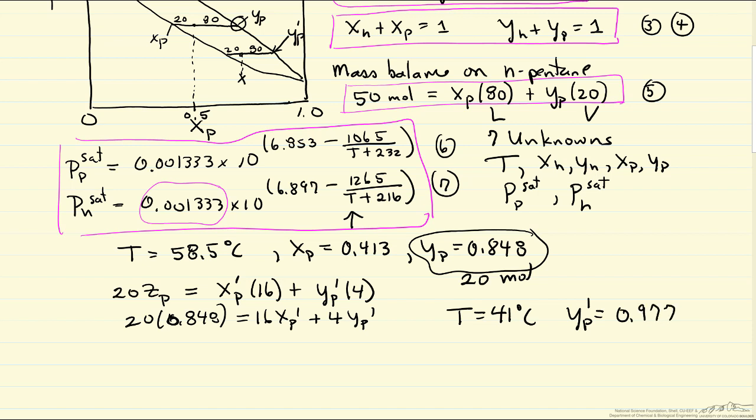So we've significantly enriched our second condensate in pentane. We've gone from 0.5 mole fraction to 0.977. And the trade-off, of course, is we only have four moles with this mole fraction, and we started out with 100 moles of 50-50 mixture.